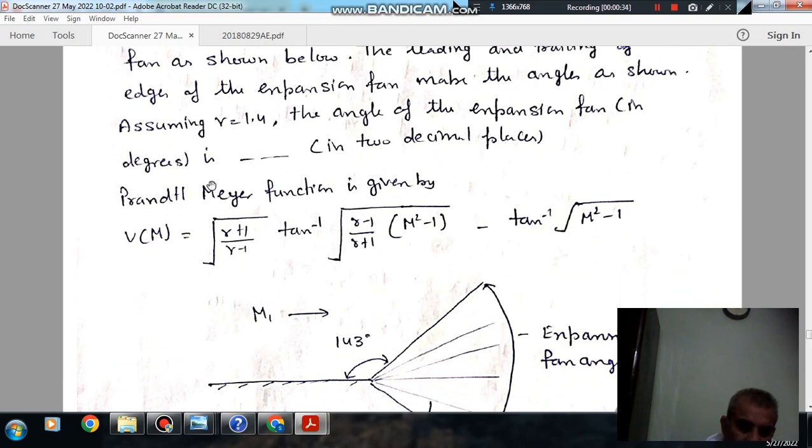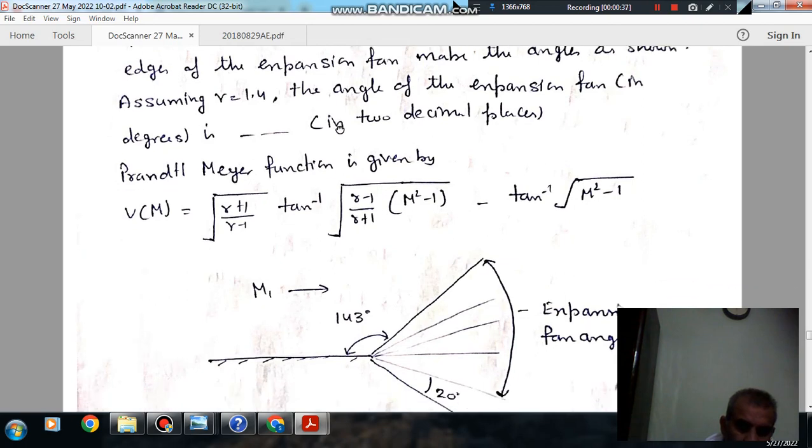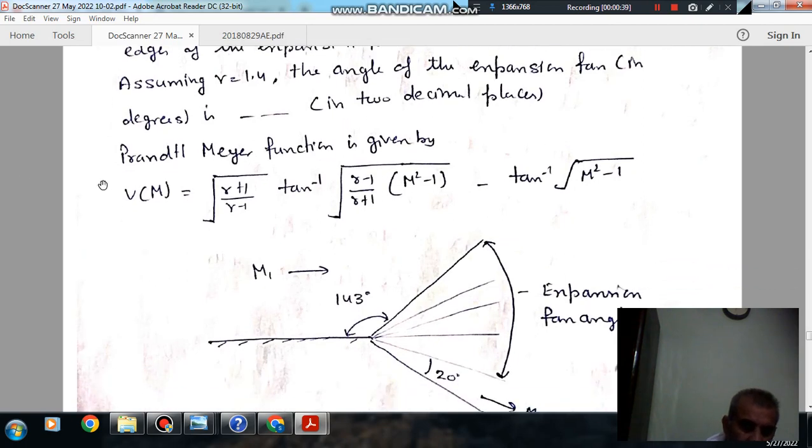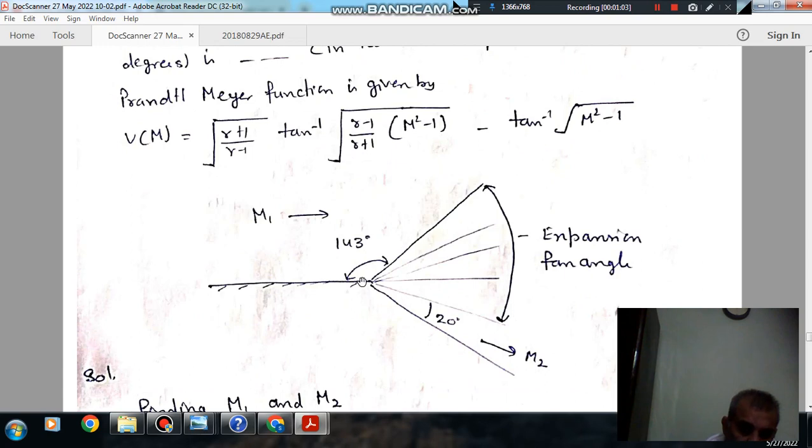The leading and trailing edge of the expansion fan make an angle as shown, assuming gamma equals 1.4. The angle of expansion fan in degrees in two decimal places. The Prandtl-Meyer function is given by: v(M) equals root of (gamma plus 1) divided by (gamma minus 1) times tangent inverse root of (gamma minus 1) divided by (gamma plus 1) times (M squared minus 1) minus tangent inverse of root (M squared minus 1).